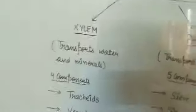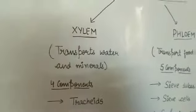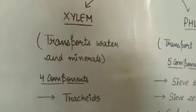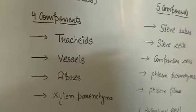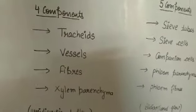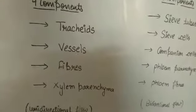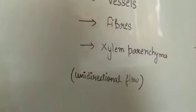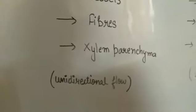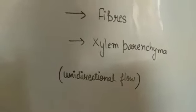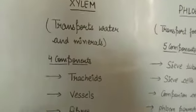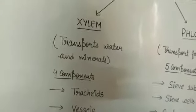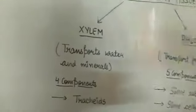Xylem is the tissue which transports water and minerals in plants. Xylem tissue is made up of four components. An important point is that water and mineral flow via xylem is only unidirectional — xylem conducts water and minerals in only one single direction: upward from roots to the rest of the plant.